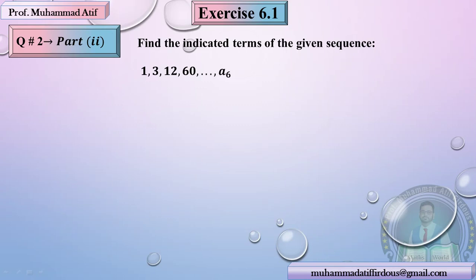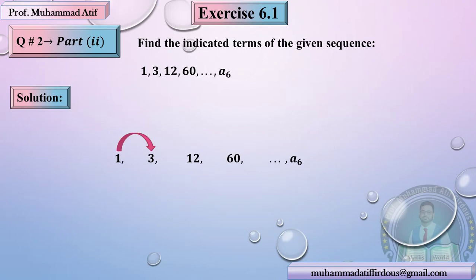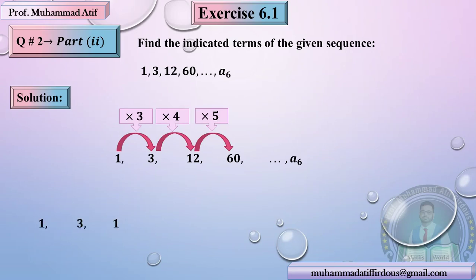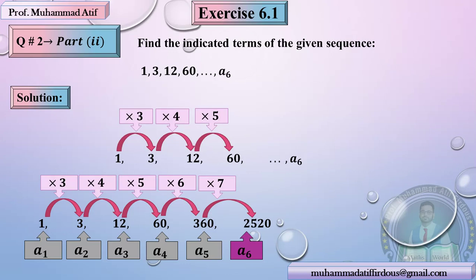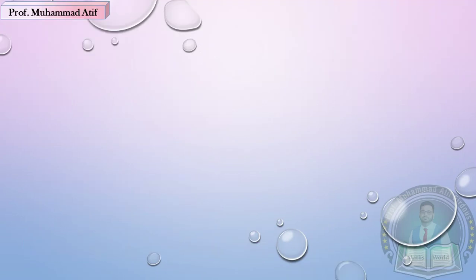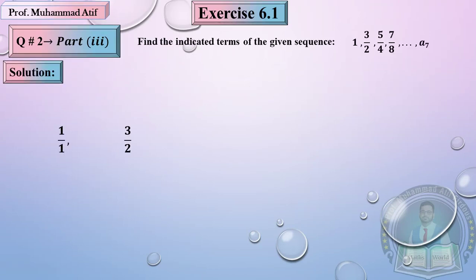Let's move on. Now the sequence is 1, 3, 12, 60 — find the 6th term. Between 1 and 3, what happened? Multiply by 3. Between 3 and 12, multiply by 4. Between 12 and 60, multiply by 5. So the pattern is multiplying by increasing integers: 3, 4, 5, 6, 7... Keep going: multiply by 6, then multiply by 7. The 6th term comes out as 2520.